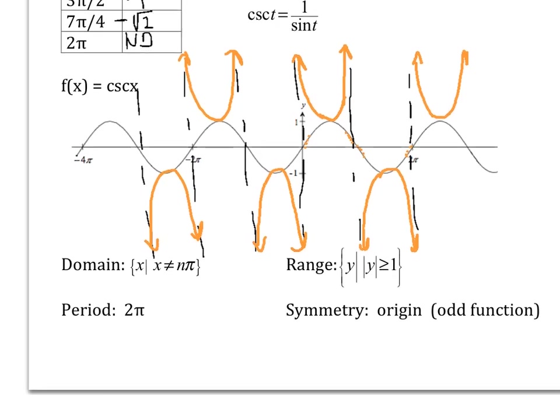That's the graph of the cosecant function. Its properties: the domain is x cannot equal n pi, where n is an integer. The range is all y values where the absolute value of y is greater than or equal to one — that is, y is either greater than or equal to one, or less than or equal to negative one. Period is two pi, and it's symmetric with respect to the origin — it's an odd function.